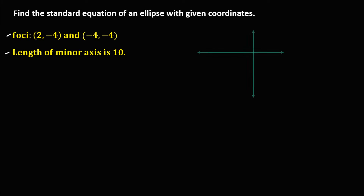First, we need to graph this ellipse. In the plane we have positive x, negative x, positive y, and negative y. From the given coordinates, the first focus has x equal to positive 2 and y equal to negative 4, so we plot and connect that point.